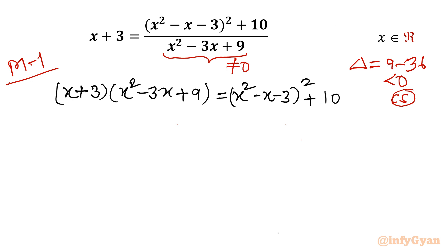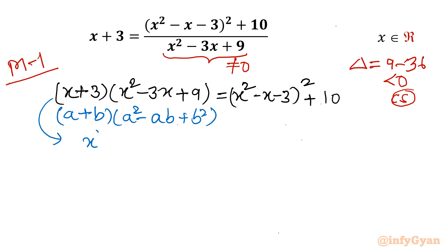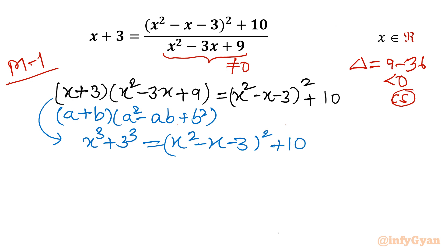You can see the left hand side is one identity: (a + b)(a² - ab + b²), which is the formula for a³ + b³. So I can write straight away our equation as x³ + 3³. The right hand side remains (x² - x - 3)² + 10.